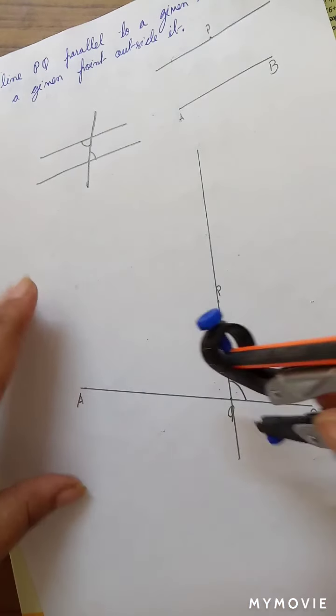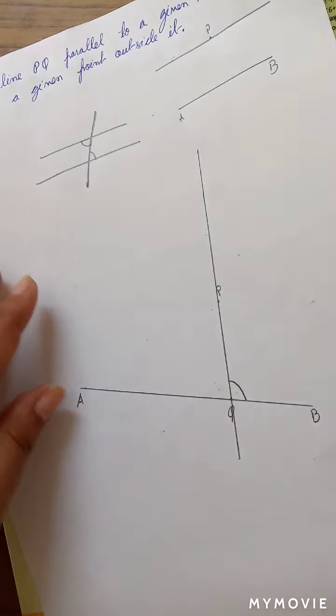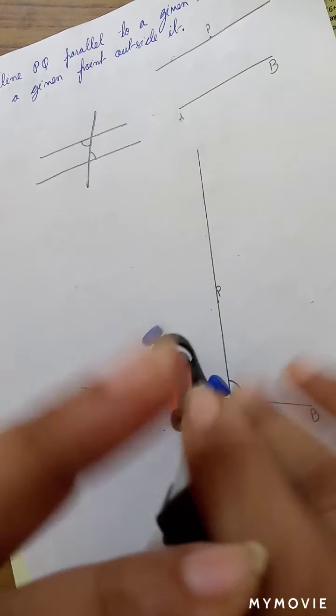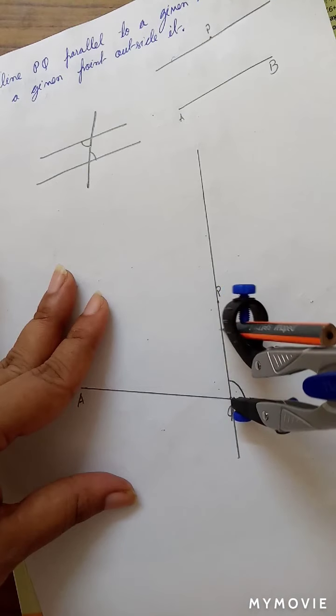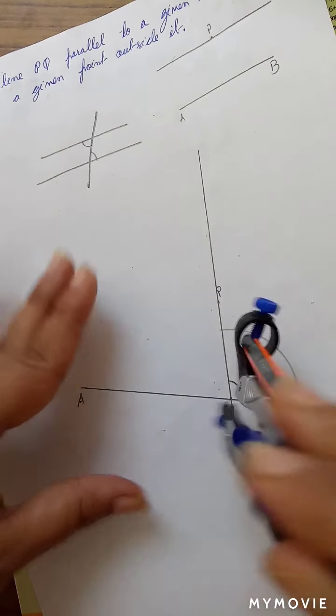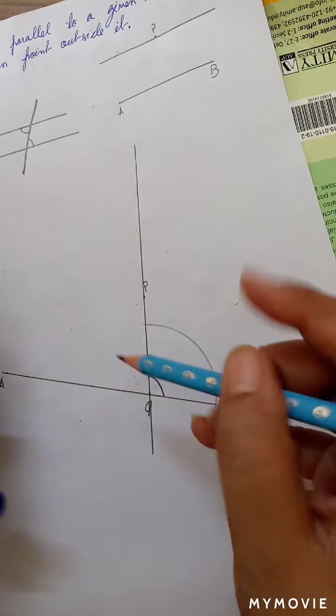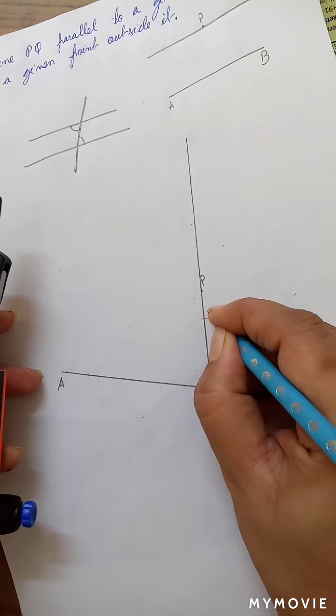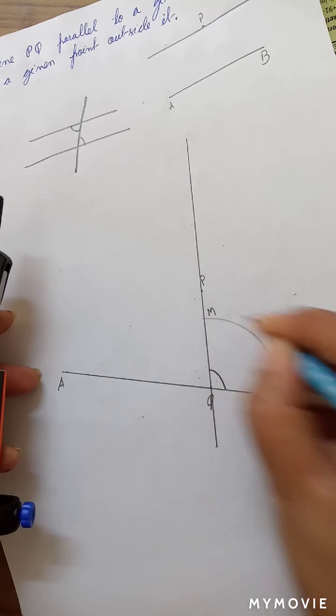Here, with the help of this compass and with Q as the center, construct an angle—angle C, M, and N.